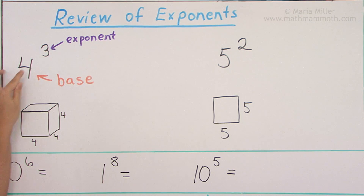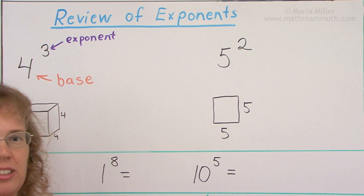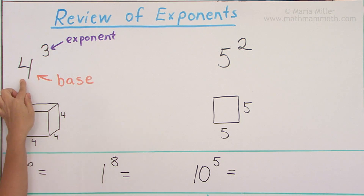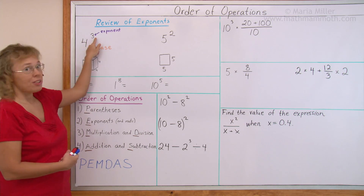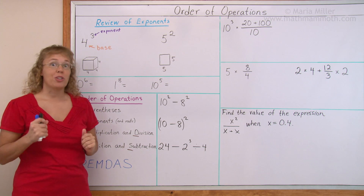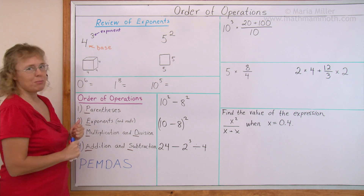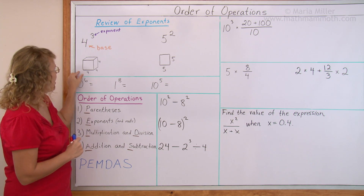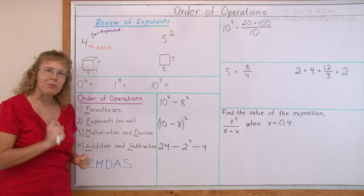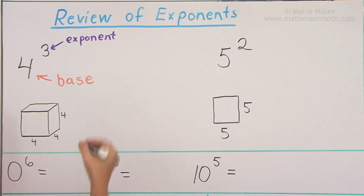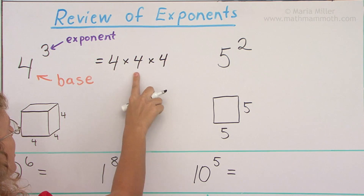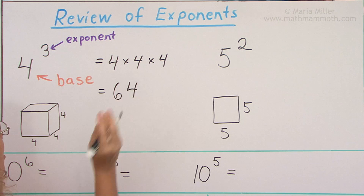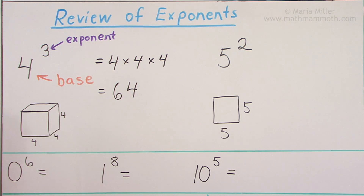Here I have 4 to the third power. This is just a shorthand for repeated multiplication — it means 4 multiplied by itself 3 times: 4 times 4 times 4. We call it 4 to the third power, or 4 cubed. 4 cubed comes from the fact that if you have a cube with edge length 4, its volume is 4 cubed. So 4 times 4 is 16, times 4 equals 64 — that would be the volume of this cube in cubic units.